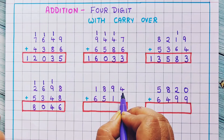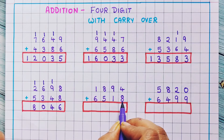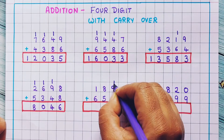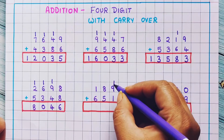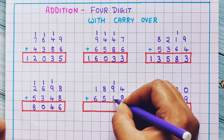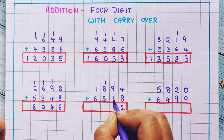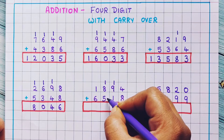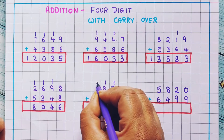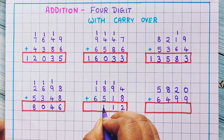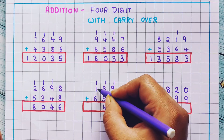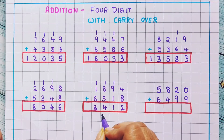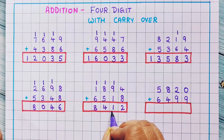Now 1894 plus 6580. Now 4 plus 8 is 12. 1 plus 9 is 10, and 10 plus 1 is 11. Now 1 plus 8 is 9, and 9 plus 5 is 14. So let's write 1 over here and 4 over here. 1 plus 1 is 2, and 2 plus 6 is 8. So the answer is 8,412.